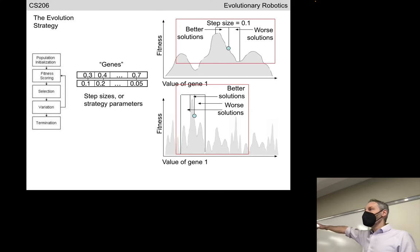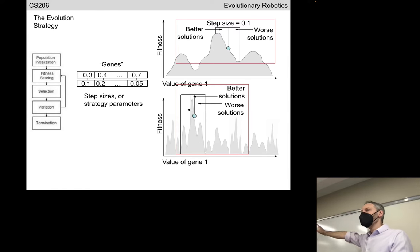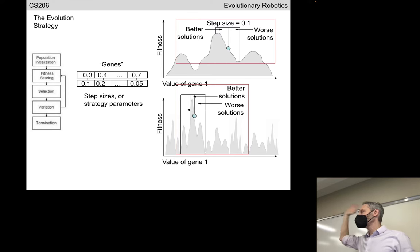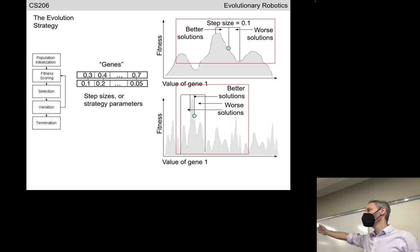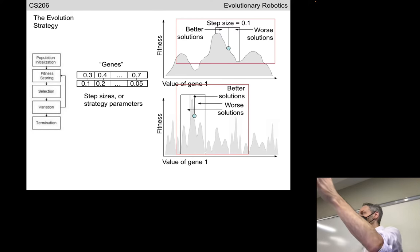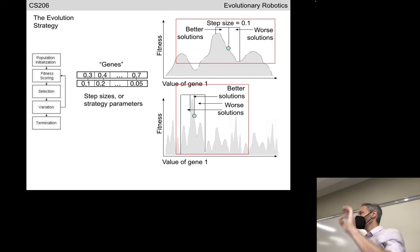Each gene has its own step size, and each gene corresponds to a different horizontal dimension in the fitness landscape. For a given gene, lots of change may cause relatively little change in height, so we can take big steps. Another gene might be more rugged — it may influence fitness more, meaning if we change that gene even by a small amount, fitness is going to change by a large amount.